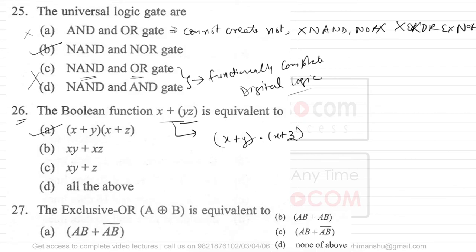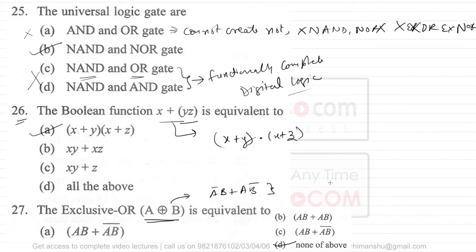Question 27 asks what A XOR B is equivalent to. A XOR B is equivalent to A'B + AB'. This expression does not appear to be given in any of the listed options, so the answer is option D — none of the above — since A'B + AB' is not provided among the choices.